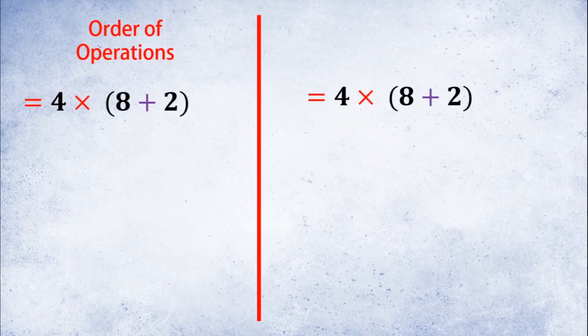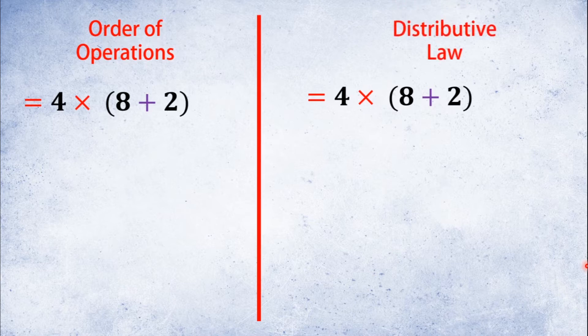In this video, we also consider Order of Operations. This Order of Operations rule is our framework. The Distributive Property lane is our middle section within it.